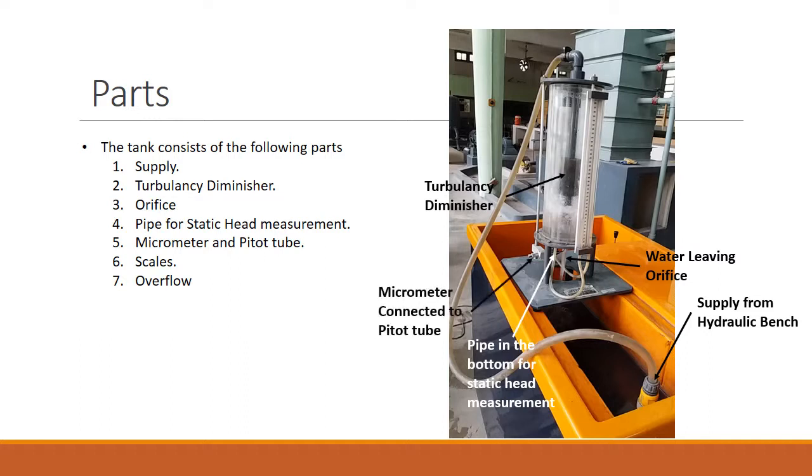The next is the micrometer connected to the Pitot tube. The Pitot tube and the micrometer are connected so that they can measure the velocity and the total head, or so to say the entire energy associated with the water that is coming out at the vena contracta. There are two scales, one for the Pitot tube and one for the static head.